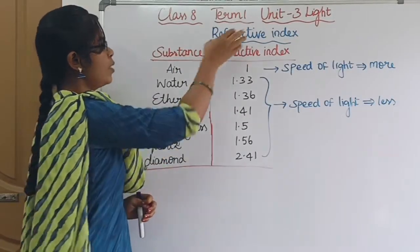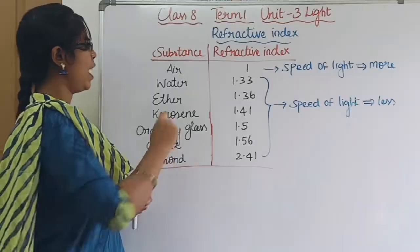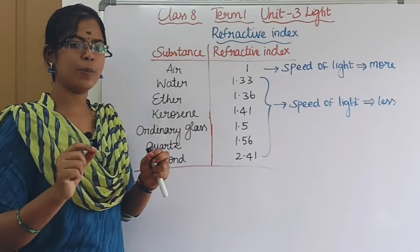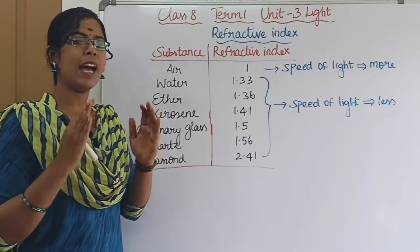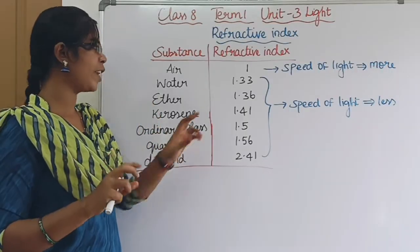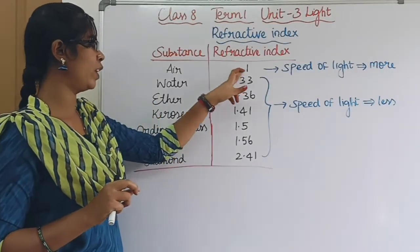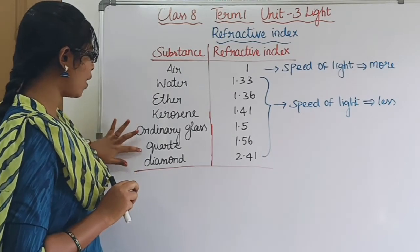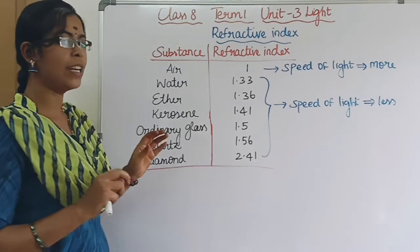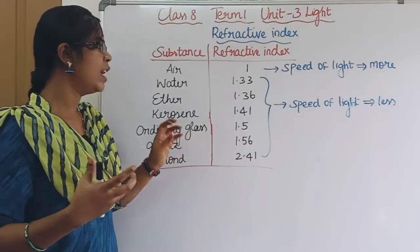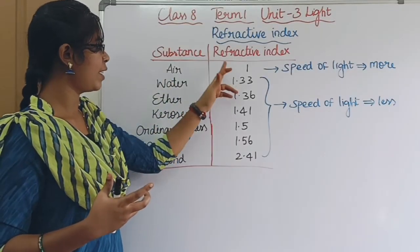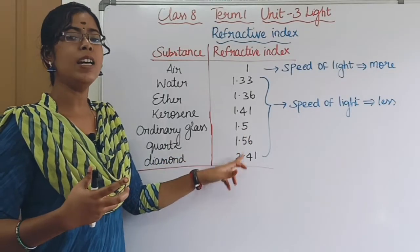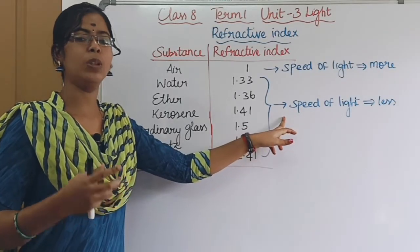The refractive index varies for different transparent materials: water, ether, kerosene, ordinary glass, quartz, and diamond. The higher the refractive index of a material, the lower the speed of light in that medium.